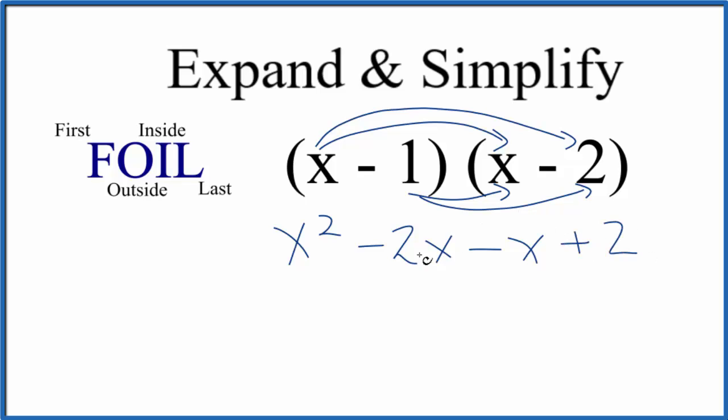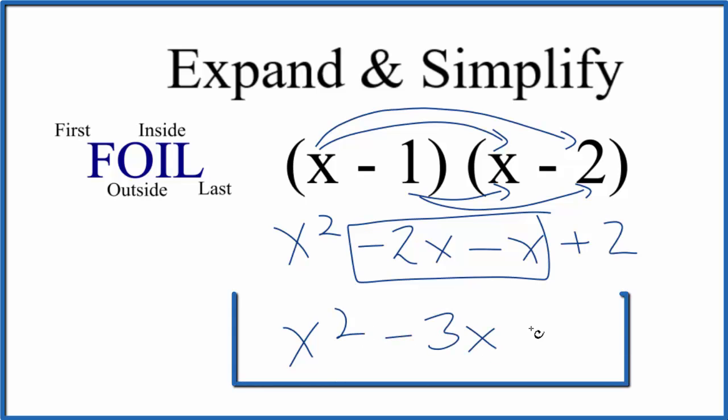Here we have negative 2x and negative x. We can combine these terms, so we end up with x squared minus 3x plus 2. So when we expand and simplify (x - 1) times (x - 2), this is what we end up with.